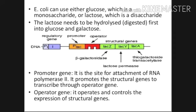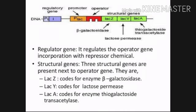There are different genes in the operon. The promoter gene is a site for attachment of RNA polymerase, which promotes the structural genes to transcribe through the operator gene. The operator gene controls the expression of structural genes. In the diagram, the orange region is the promoter gene, the red one is the operator gene, and the green portions — LACZ, LACY, and LACA — are the structural genes.